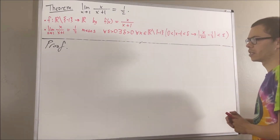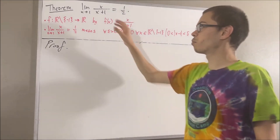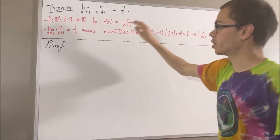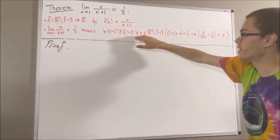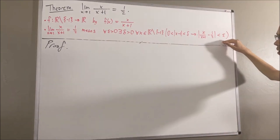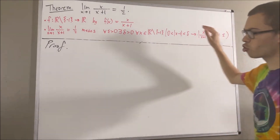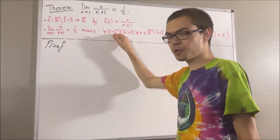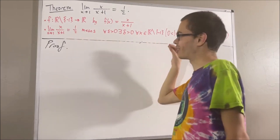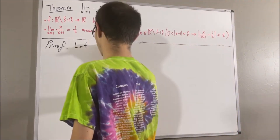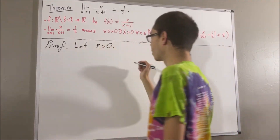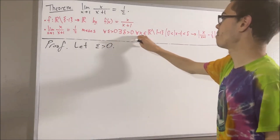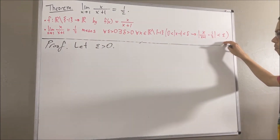So the whole goal is to prove this limit. And to prove it, all we've got to do is prove that this statement is true. Since we're trying to prove a statement about all epsilon greater than 0, give me an arbitrary epsilon greater than 0. And from here, we want to find a delta greater than 0 that makes this statement turn out true.